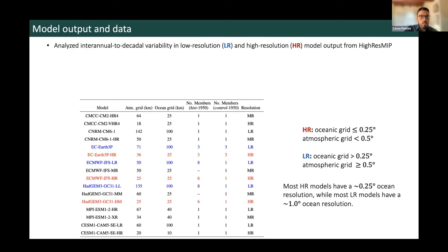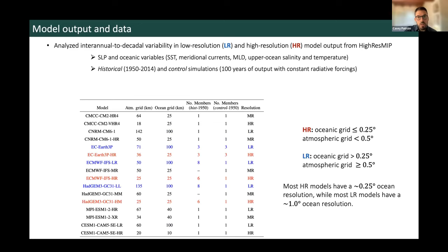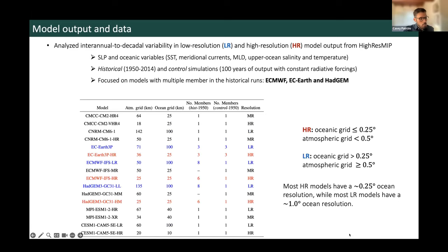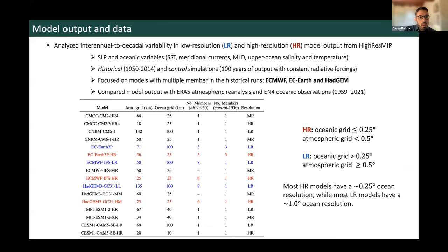I'm showing the models used in this table. Since specific resolutions vary between modeling institutions, we came up with our own definition of HR and LR. Most of the HR models have a quarter-degree ocean resolution while most of the LR models have one-degree ocean resolution, whereas the atmospheric resolution cutoff is a half degree. We analyzed sea level pressure and different oceanic variables from the historical and control simulations, focusing primarily on models with multiple members in the historical runs — ECMWF, EC-Earth, and the HadGEM model. We compared these simulations to ERA-5 atmospheric reanalysis as well as observations from EN4 between 1959 and 2021.